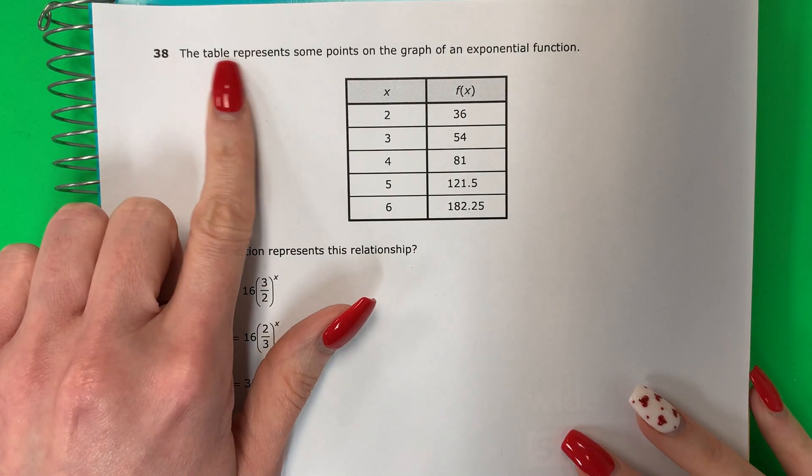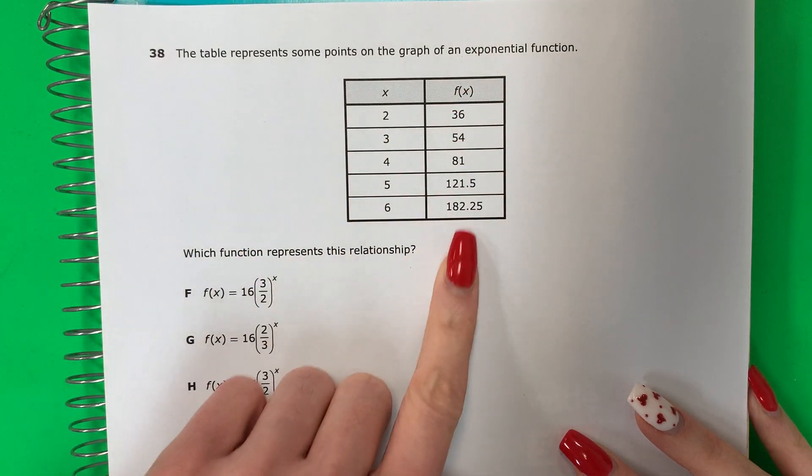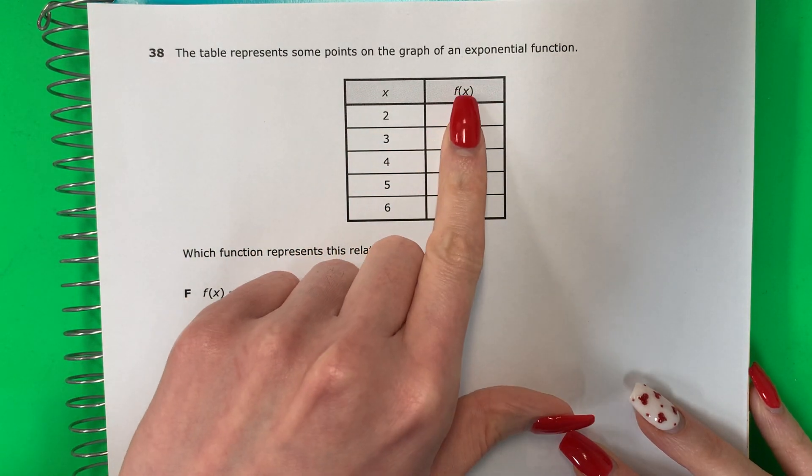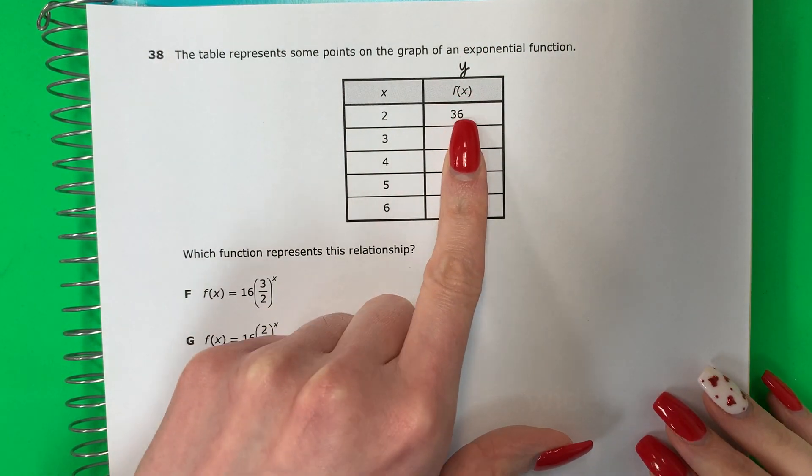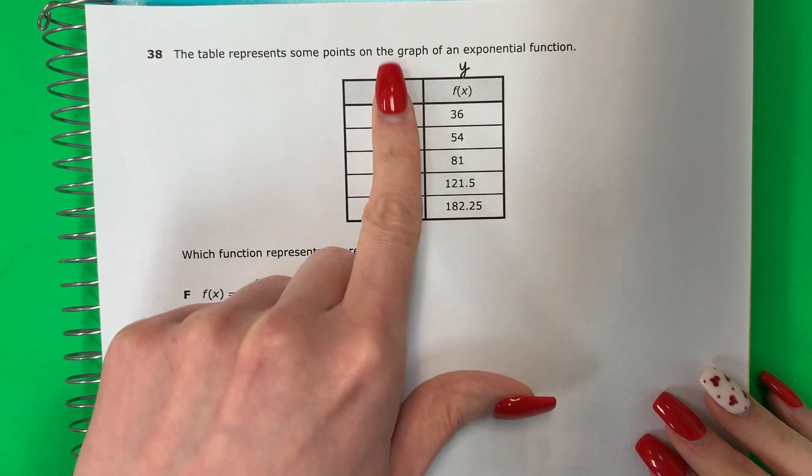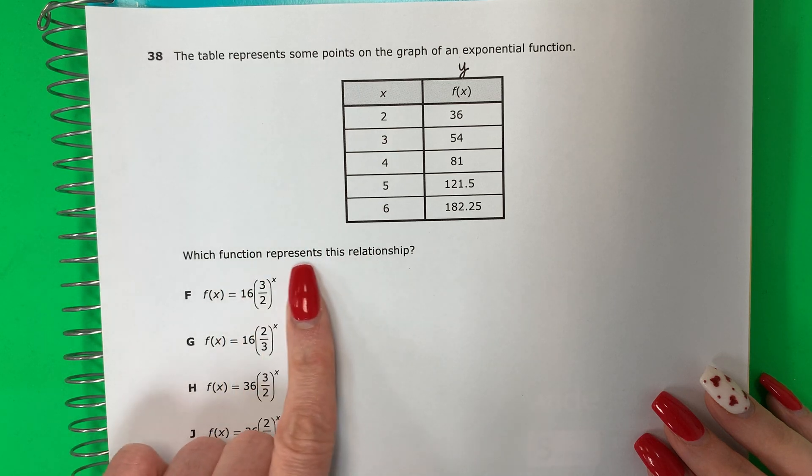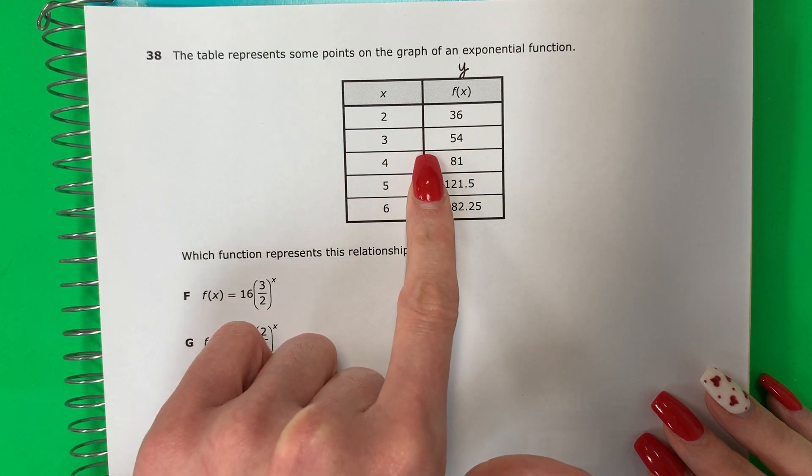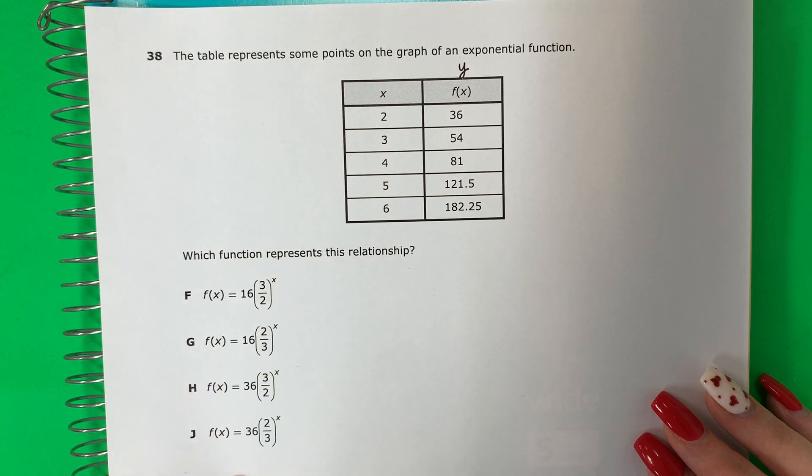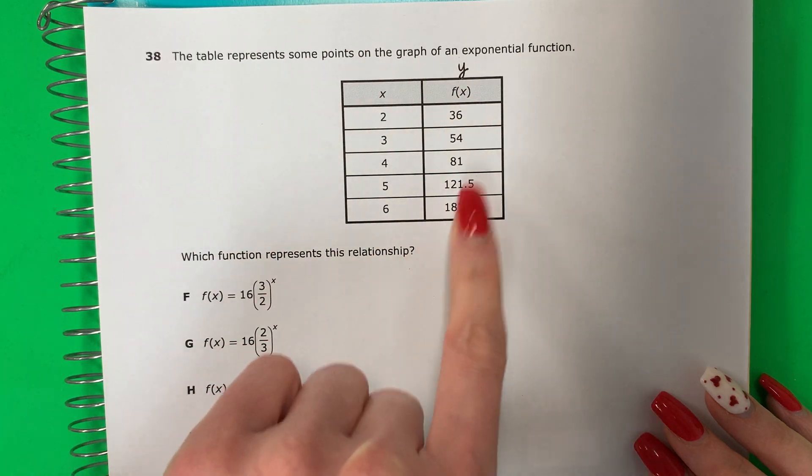Question 38. The table represents some points on the graph of an exponential function. So here I have a table. This is x, this is f of x. Remember f of x is y. Recuerda que f de x es la y. Which function represents this relationship? ¿Cuál función representa esta relación? So I have some equations and I need to see which one will give me this table. Tengo ecuaciones y necesito ver cuáles de estas ecuaciones me da esta tabla.